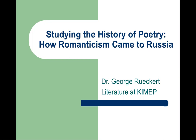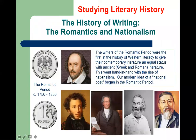We talked already about the Romantic movement in England, and I want to talk now about how Romanticism came to Russia. This is actually a movement that was international and that happened among a lot of different countries at the same time. We talked about the Romantic period as being the period of modern literature in which modern national poets and national literature began. Our idea of a national poet began in this period, between about 1750 and 1850.